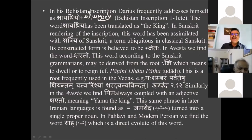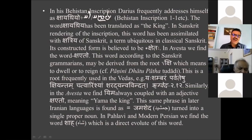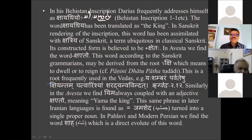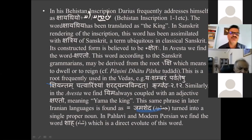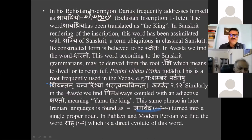In Avesta, we find Yim, which is always coupled with an adjective — Yama Kshayato — meaning 'Yama the king.' In later Iranian languages, this same phrase is found as Jamshed, which turned into a single proper noun, though it is actually a compound of Yama and Kshayata. In Pahlavi and modern Persian, we find the word Shah, which is the most important and popular word and a direct evolute of Kshayaseo.